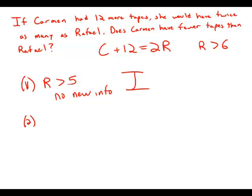Statement number two tells us that Carmen has fewer than 12 tapes. Let's think about this for a second. If Carmen and Raphael had the same number of tapes, then Carmen would have to actually add that number again to get twice Raphael.